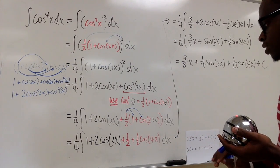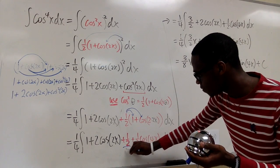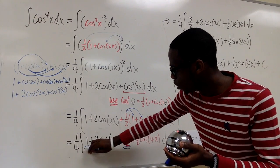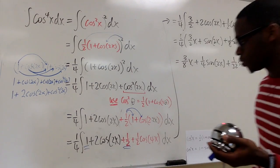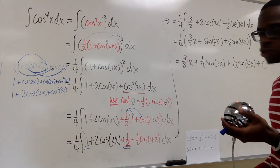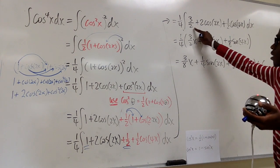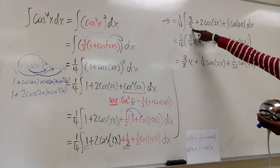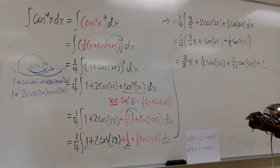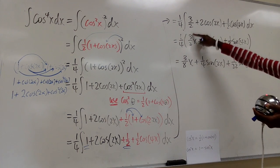We see ½ and 1, and combining those gives us 3/2, which we have right here. Now we're set to take the integral.